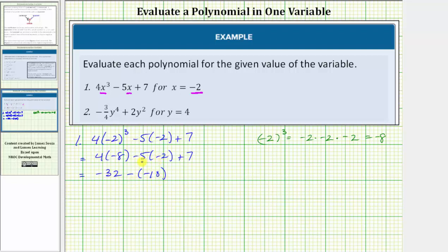We can also view this as negative five times negative two, which is positive ten, and just write plus ten. We still have plus seven. Let's write minus negative ten as plus ten. So we have negative thirty-two plus ten plus seven.